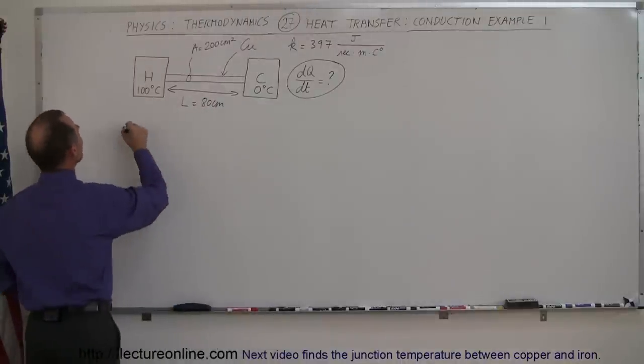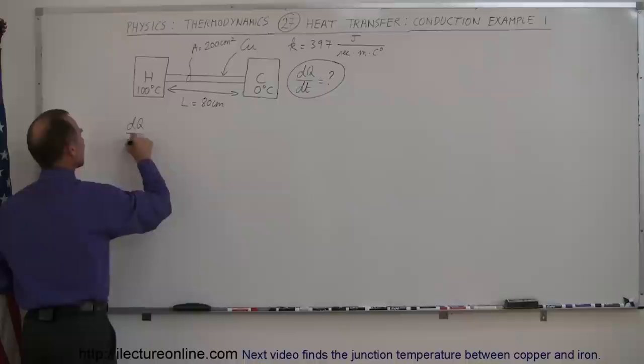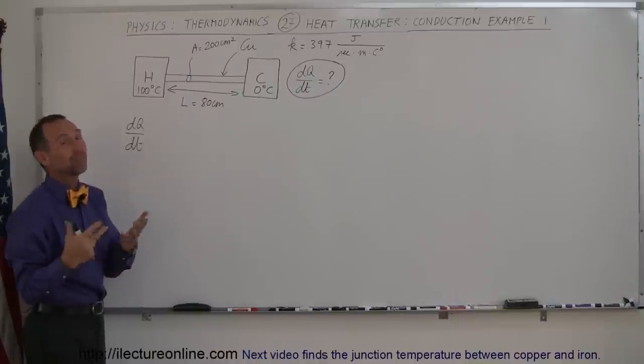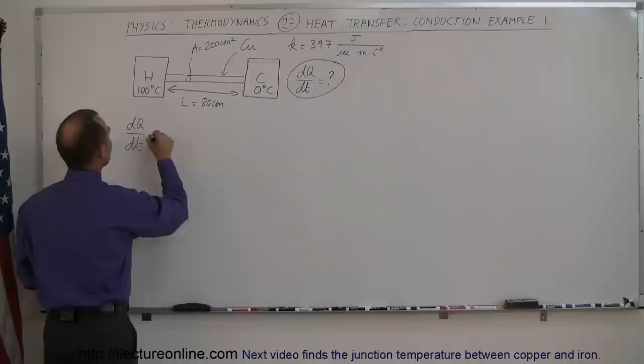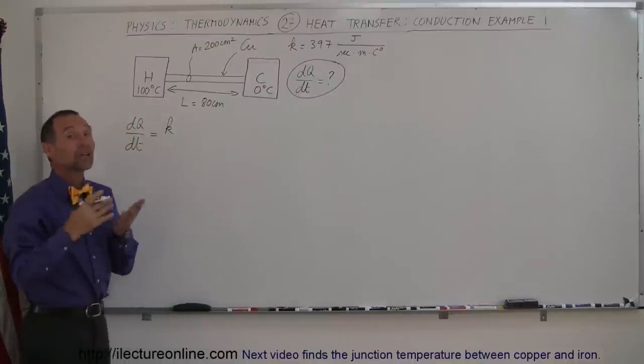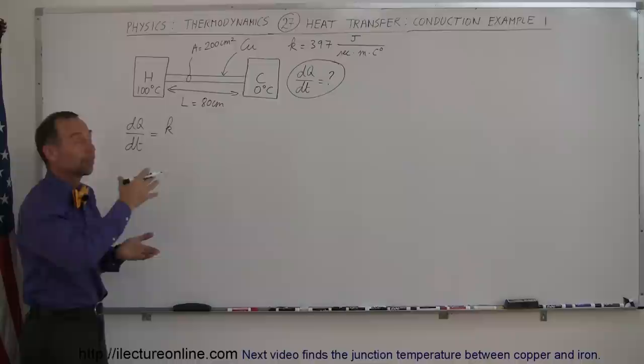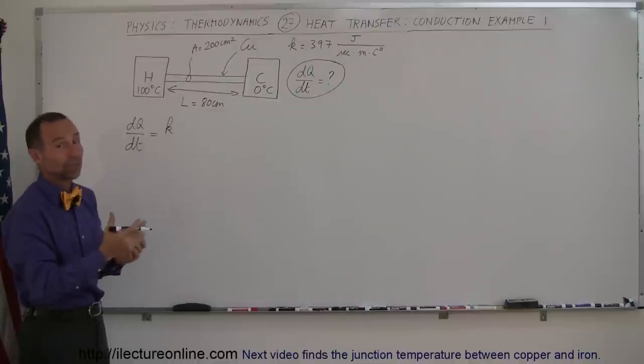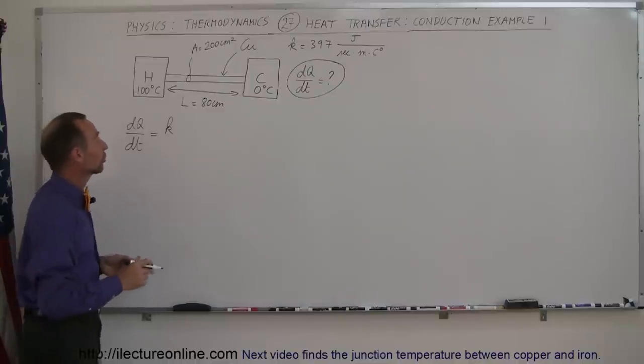And the equation for the dQ/dt, that just simply means the amount of heat transferred per unit time, per unit time typically is per second, is equal to k. The conductivity constant, the greater the conductivity constant, the greater the propensity for the material to conduct heat. So the bigger k, the more heat will transfer.